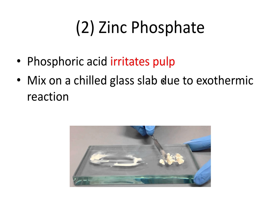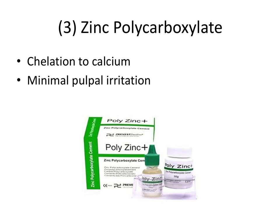You do this mixing on a chilled glass slab due to it being an exothermic reaction. The cement does not have a chemical bond to the underlying tooth structure, so it's simply a luting agent—it seals and glues the crown to the tooth but does not chemically bond to the tooth structure.